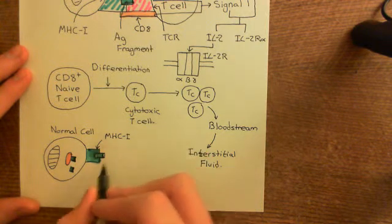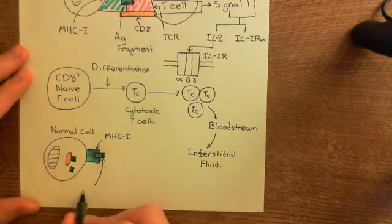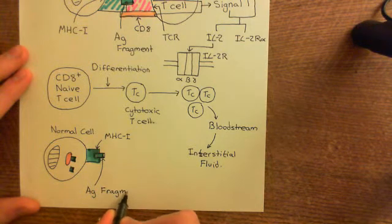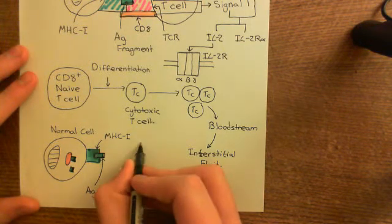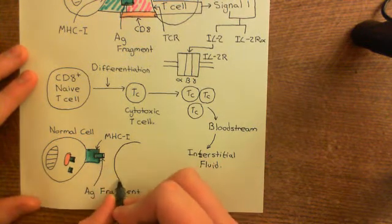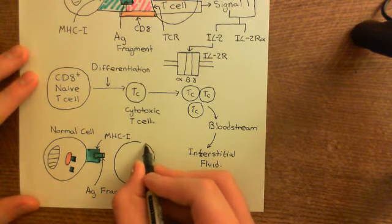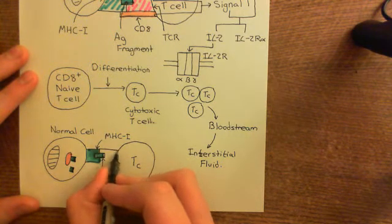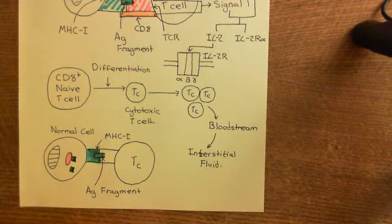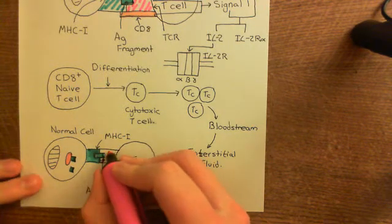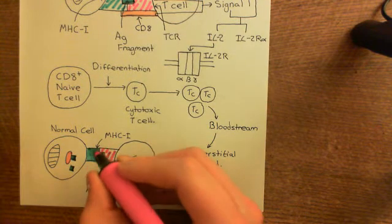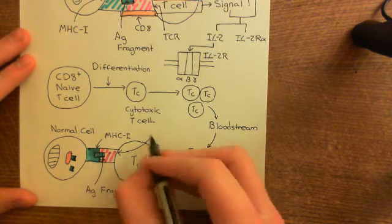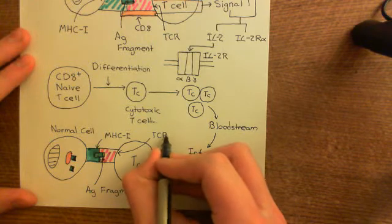Here is our major histocompatibility complex class 1 and our antigen fragment on the surface of the infected cell. One of these cytotoxic T-cells is going to come up to this infected cell — and this is not good news for the infected cell. The cytotoxic T-cell has a T-cell receptor on its surface which is complementary for this exact antigen fragment, and the T-cell receptor will bind to the antigen fragment displayed on MHC class 1 on the surface of the infected cell.